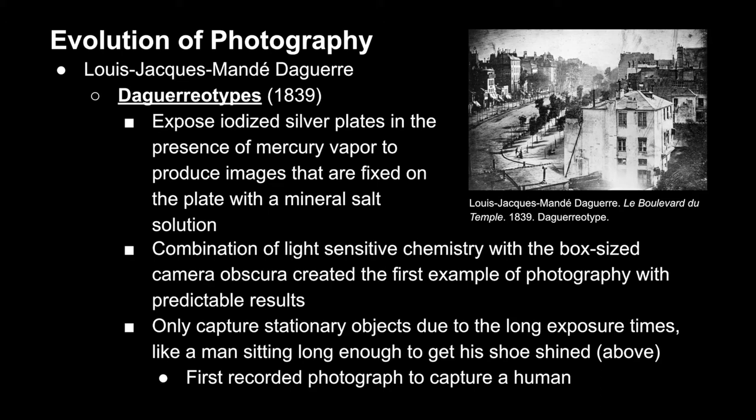Utilizing this chemical photosensitivity with the box-sized camera obscura, this was the first process that had repeatable, predictable results. That said, due to the long exposure times, it could only capture stationary objects, which made it very difficult to capture humans.